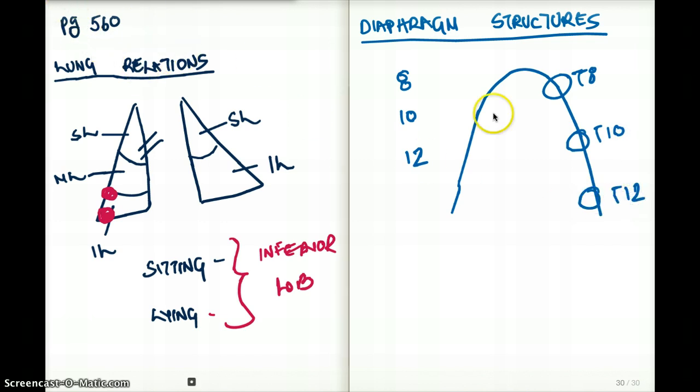At the level of T8, what comes out is going to be the IVC. Inferior vena cava comes out at the level of T8.